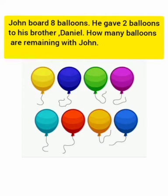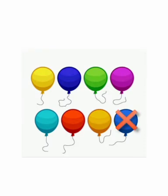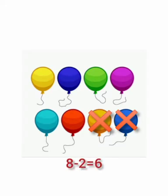Now here, John has to cut 2 balloons from 8 balloons. From 8, take away 2 — means 8 minus 2. Let's cut 2 balloons. Now count how many balloons are remaining: 1, 2, 3, 4, 5, 6. So 8 minus 2 is equal to 6.